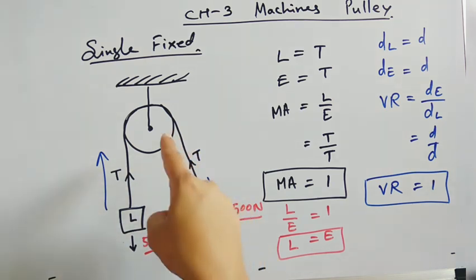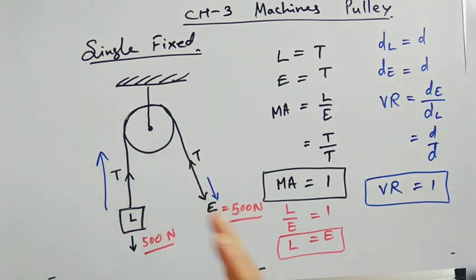So we use single fixed pulley which makes us convenient to pull in downward direction. So if direction of effort is downwards, it is easier or convenient for us to pull the bucket filled with water. So this is the purpose of single fixed pulley.